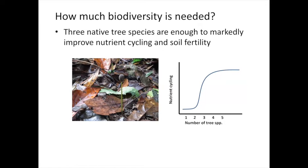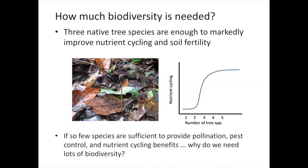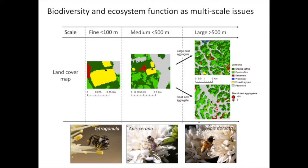In terms of nutrient cycling, research showed that three or four native tree species are sufficient to really improve nutrient cycling processes and soil fertility — so long as we have a mixture of species providing leaf litter at different times of the year. So if so few species are sufficient to provide benefits of pollination, pest control, and nutrient cycling, why do we need lots of biodiversity? This is where we come back to the importance of different scales.